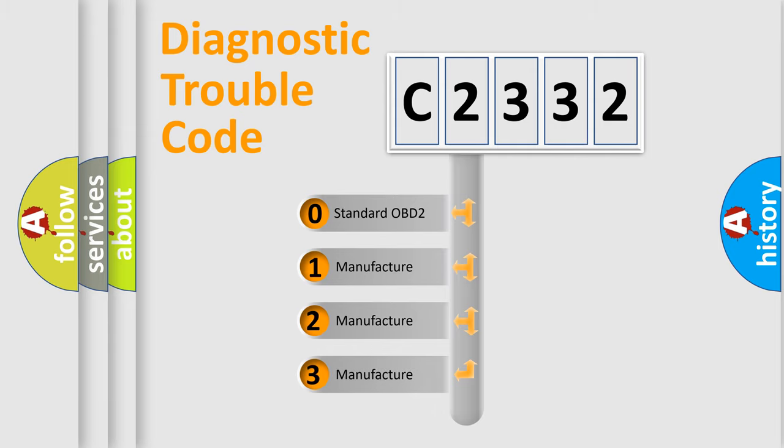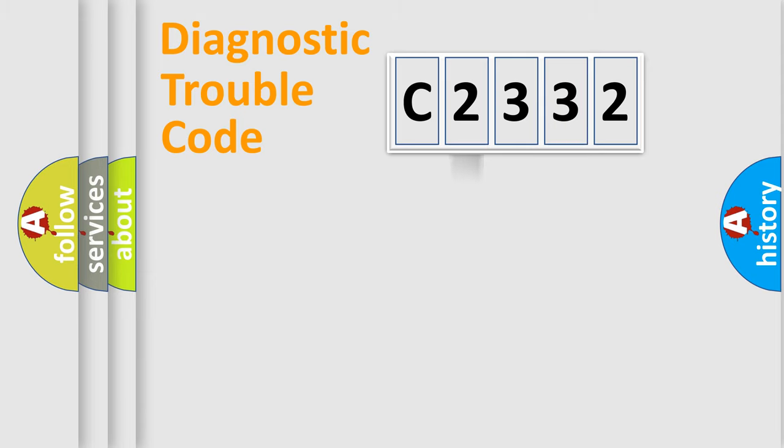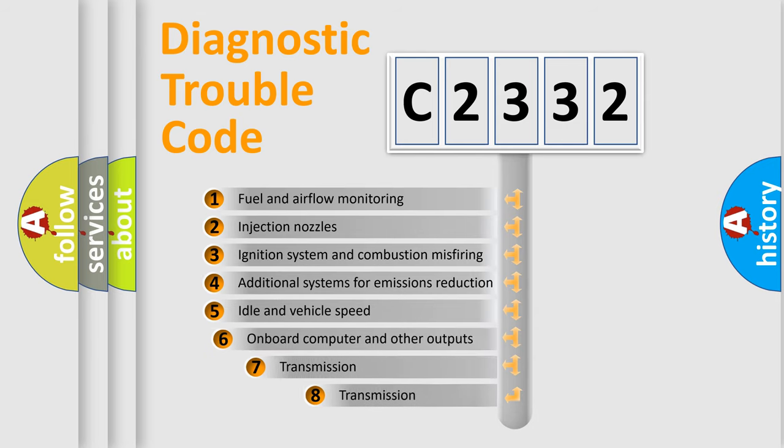If the second character is expressed as zero, it is a standardized error. In the case of numbers 1, 2, 3, it is a more precise expression of the car-specific error.